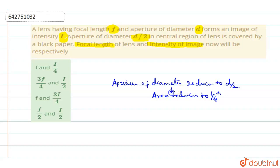So if aperture diameter reduces to d/2, area reduces to 1/4, and whatever the change in area, the same change in intensity will also be there. So intensity also reduces to 1/4 of it.